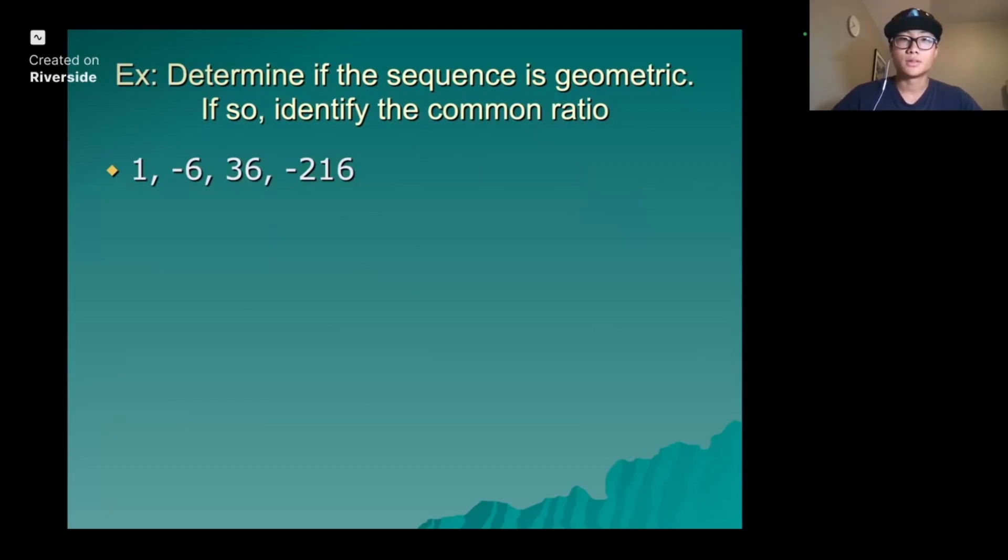Determine if the sequence is geometric. If so, identify the common ratio. In this case, we can see that 1, negative 6, 36, and negative 216 have a common ratio, where it's going up by a factor of negative 6. Yes, common ratio is negative 6. So yes, this is a geometric sequence.